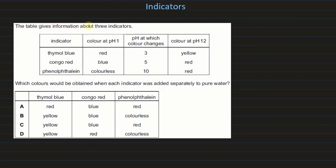The next question gives information about three indicators — thymol blue, Congo red, and phenolphthalein — their colors at pH 1 and 12, and the pH at which they change color. Each indicator is added separately to pure water (pH 7). Thymol blue changes color at pH 3, so above pH 3 it is yellow. Congo red changes color at pH 5, so at pH 7 it is red. Phenolphthalein changes color at pH 10, so at pH 7 it is colorless. The answer is D.